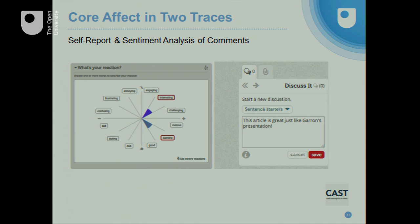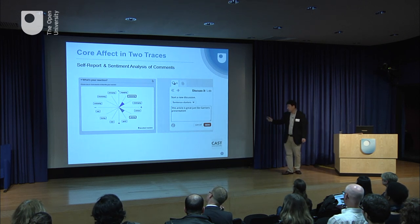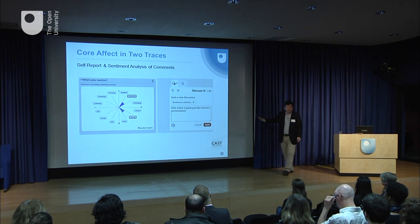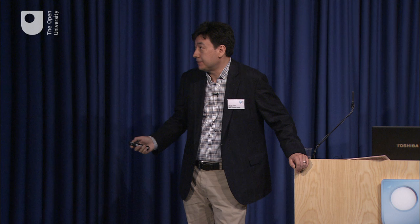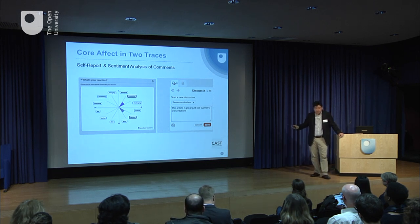Low energy words are on the bottom, high energy words are on the top, negative words are on the left, positive words are on the right. Students could provide their emotional response to a reading they just completed — for example, saying they found it both interesting and calming. Simultaneously, they could make comments in a discussion. There are techniques called sentiment analysis that analyze text to organize it around low energy, high energy, negative, and positive dimensions. This was an opportunity to look at multiple traces of data organized across core affect to better understand learners' emotional states.